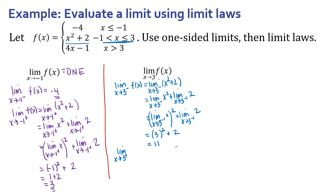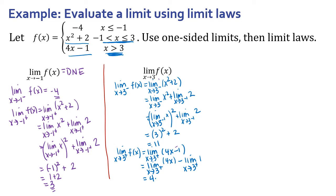For the limit as x approaches 3 from the right, values larger than 3 come from the piece 4x − 1. Applying the difference limit law to separate it out, and moving the constant 4 in front, I'm left with the limit of x and the limit of a constant. That gives me 4(3) − 1 = 11. So from the left I approach 11 and from the right I approach 11, which means the limit as x approaches 3 is 11.